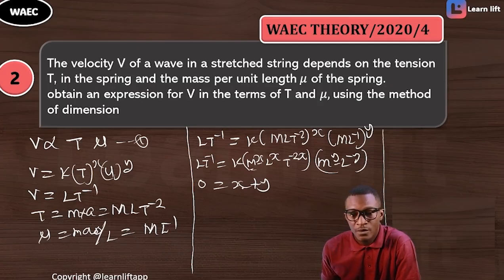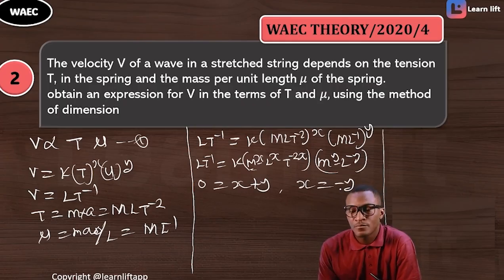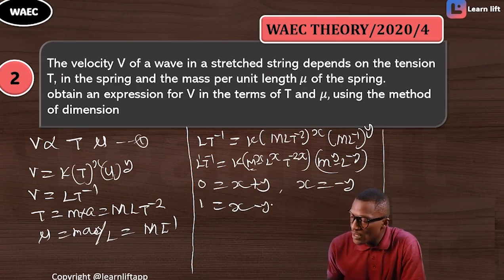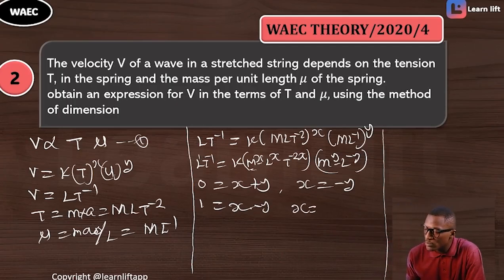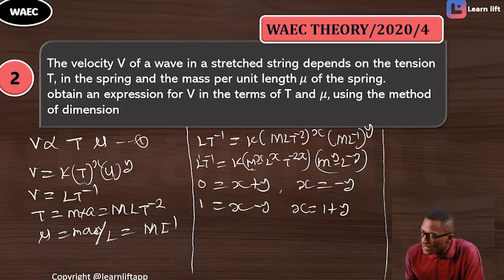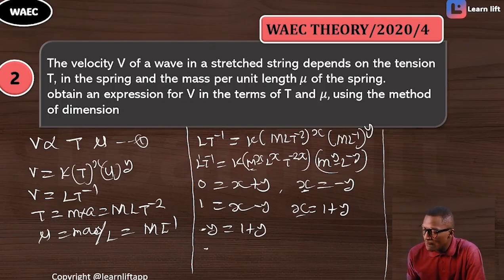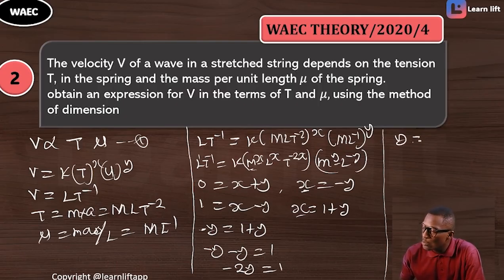For L: the power of L on the left is 1, which equals x − y on the right, so 1 = x − y. Since x = −y, substituting gives 1 = −y − y = −2y. Therefore y = −½.